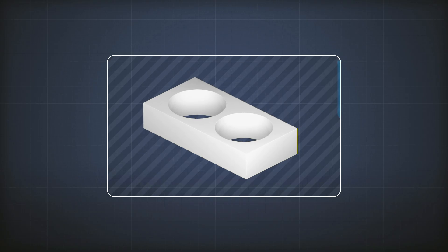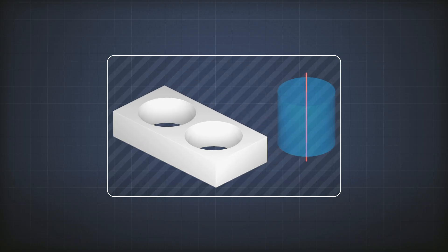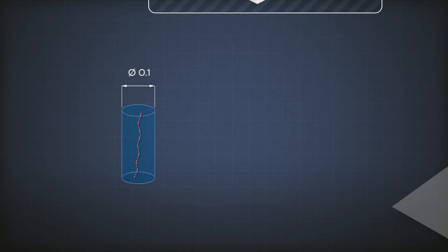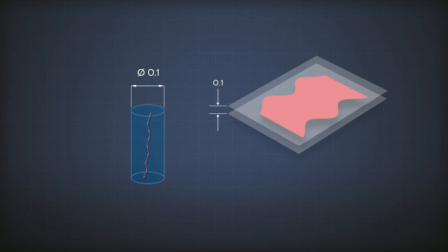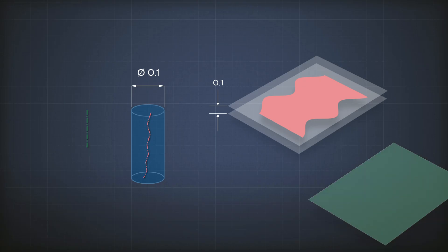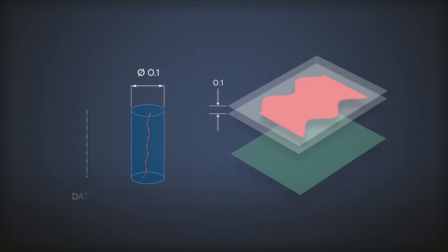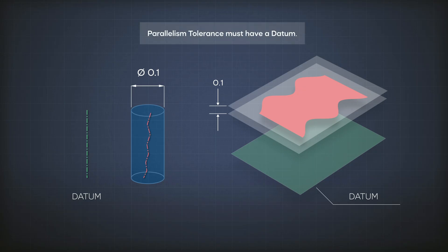Let's summarize the parallelism tolerance. The tolerance zone is either the diameter of a cylinder or the distance between two planes. In either case, the center line of the cylinder or the two parallel planes are parallel to another element on the feature, and I have to name this feature by pointing at it as a datum element. Just like in plain English — you cannot say 'I want that surface to be parallel,' full stop. You have to continue the sentence and say 'parallel to something.' So the parallelism tolerance must always have a datum.